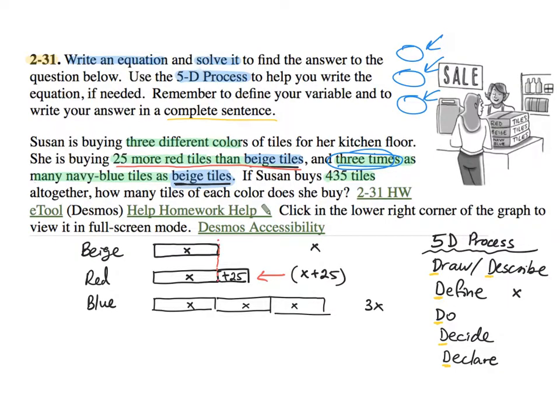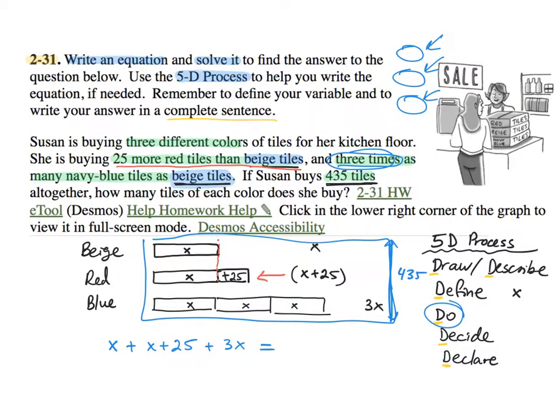So once I have that information, I'm looking like how do I tie them together? In this case, they said there's a total. We know that she bought 435 tiles total. All these together is called total, so we can take advantage of that. This will help me do the equation. So I'm going to set up my equation: X plus X plus 25 plus 3X equals the total of 435.